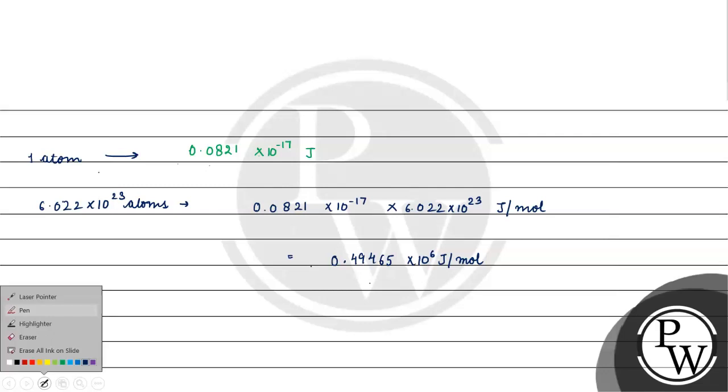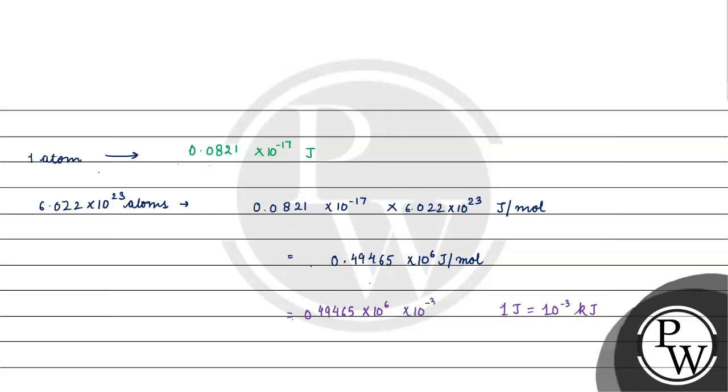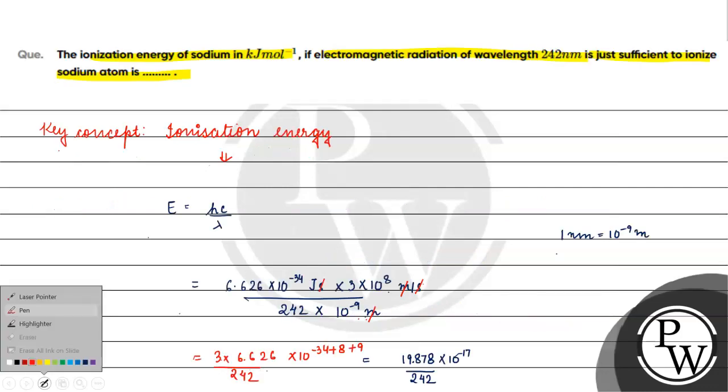Kilojoules mein chahiye ga hume. Hame pata hai 1 joule is equals to 10⁻³ kilojoules. So it will be 0.49465 × 10⁻³ kilojoule per mole. We multiply it, 10³ will come. So how much will it come? It will be 494.65 kilojoule per mole, and this will be the final answer for this question.